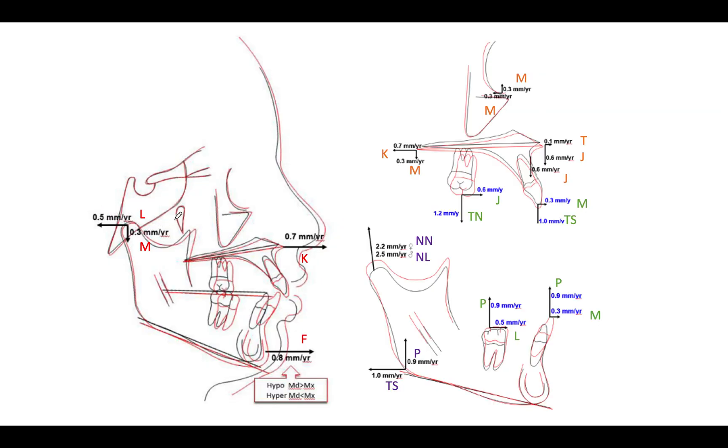So five is going to be an L. Three is going to be M. K is going to be the seven. Eight is going to be the F. And then M is three. Three is M. Seven is K. Three is M. One is T. Six is J. Six is J. Three is M. One point zero. So one and zero is TS. Six is J. One point two. One and two are T and N. Two and two are N and N. Two and five are two and L. Nine is a P. Three is an M. Nine is a P. Five is an L. Nine is a P. And then one point zero is a T and S. One zero TS.